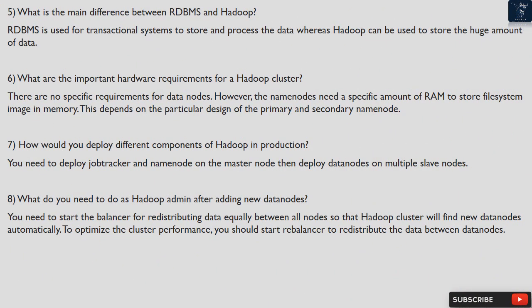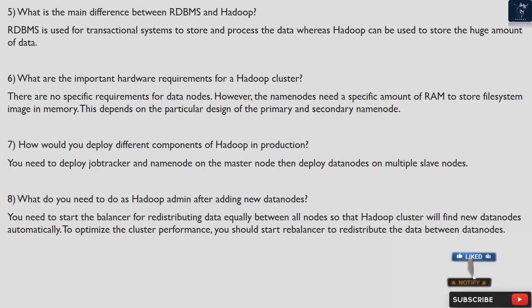Question 5: What is the main difference between RDBMS and Hadoop? RDBMS is used for transactional systems to store and process data, whereas Hadoop can be used to store a huge amount of data. Question 6: What are the important hardware requirements for a Hadoop cluster? There are no specific requirements for data nodes.